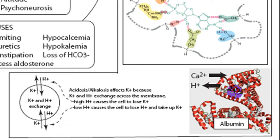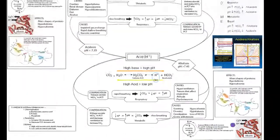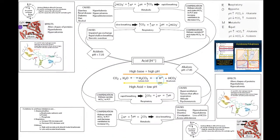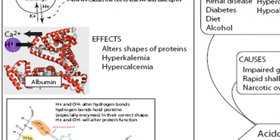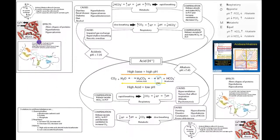If there's more acid, as in acidosis, then there's more hydrogen ion to bind to albumin, which kicks the calcium off and causes hypercalcemia. The tricky thing about causes is that there are two different types for both acidosis and alkalosis.